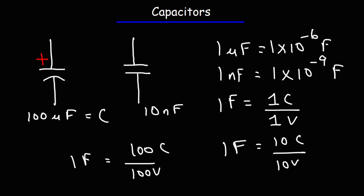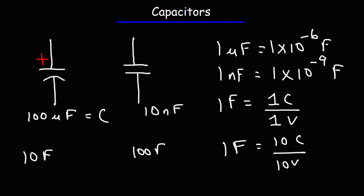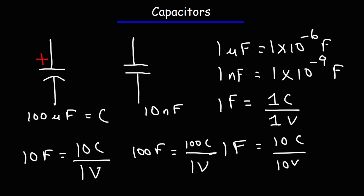Let's compare a 10 farad capacitor with a 100 farad capacitor. A 10 farad capacitor can hold 10 coulombs of charge when a 1 volt battery is connected across it. In contrast, a 100 farad capacitor can hold 100 coulombs when a 1 volt battery is connected across it. So the capacitance tells you how much charge the capacitor can hold when it has a voltage of 1 volt across it.